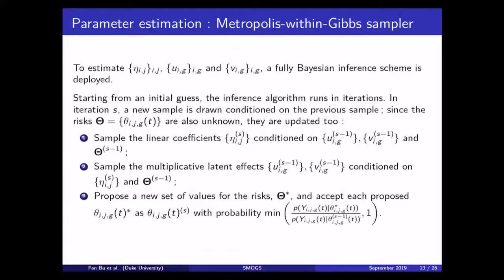We do not know the exact values of those risks, but we kind of need them to estimate all the other parameters. So, we propose a candidate set of values for those risks. And we evaluate their fitness compared to the data observed. If they look kind of good, then we tend to accept them as the new set of values for the risks.